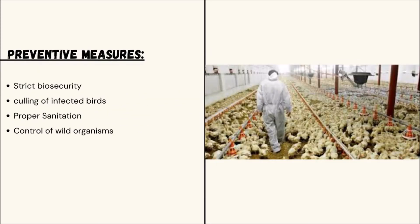Preventive measures for foul typhoid include strict biosecurity, culling of infected birds, proper sanitation, and control of wild organisms.